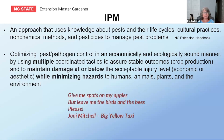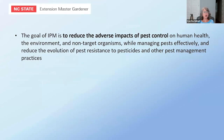As Joni Mitchell said, 'give me spots on my apples, but leave me the birds and the bees, please' — it's that same kind of concept. The goal of IPM is to reduce the adverse impacts of pest control: not totally eliminating all pests, but reducing adverse impacts on human health, the environment, and non-target organisms while managing pests effectively and reducing the evolution of pest resistance to pesticides. By implementing these techniques, you take pressure off insects to select for resistant individuals.